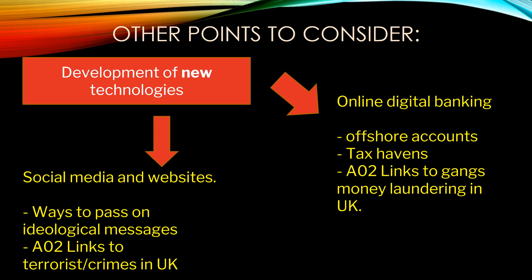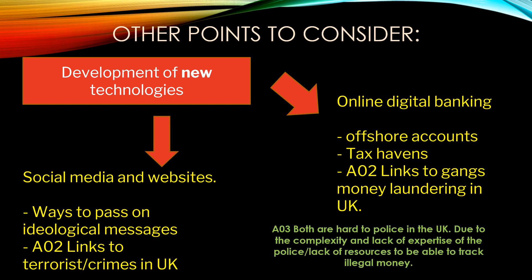For the second hook — development of new technologies — here are some ideas. Make sure you are explaining them: social media and websites, online digital banking. Give examples of how crime is occurring — ideological messages may link to terrorism in the UK, and offshore accounts and tax havens would link to gangs and money laundering in the UK. Don't forget you also need to add some AO3: both of these are really hard to police in the UK. Due to the complexity and lack of expertise or resources, it may be difficult to track illegal money. You can discuss the invisibility of it and the impact on crime statistics to get your AO3 marks.